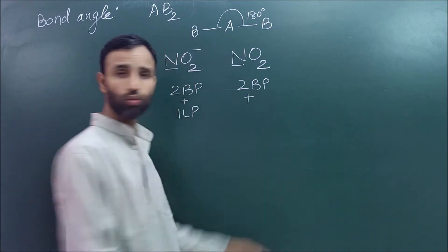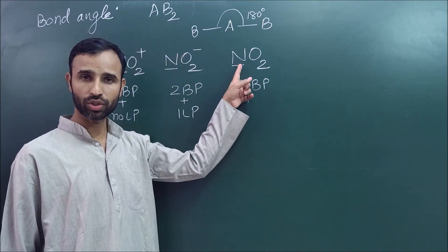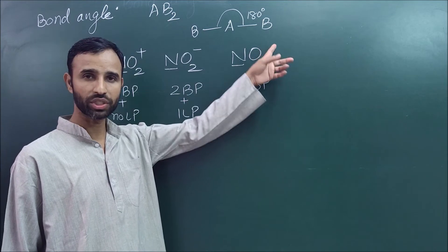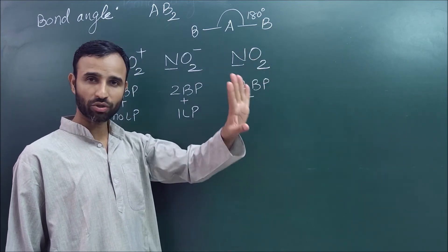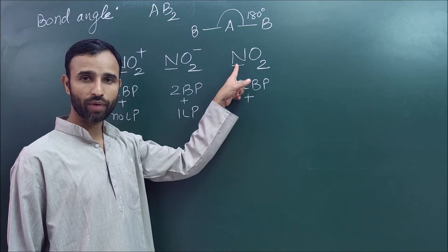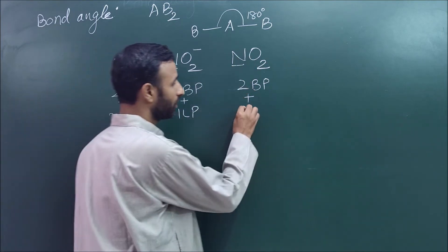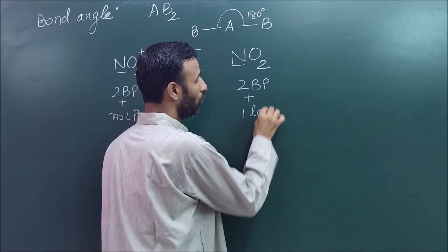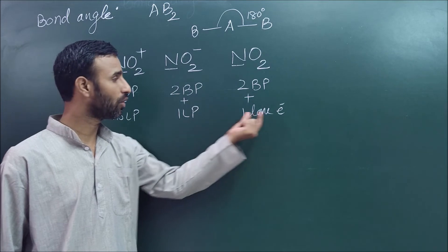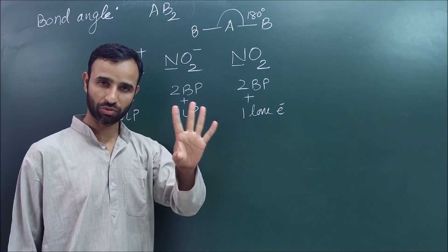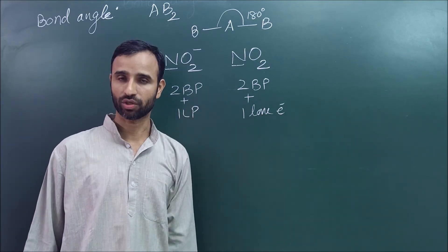What about NO2? Five electrons, no gain or loss because it is neutral. Two oxygens use four electrons. Out of five, four are used, so we left with one lone electron. We have only one lone electron. Here we have lone pair, we have only one lone pair electron and that is called lone electron.